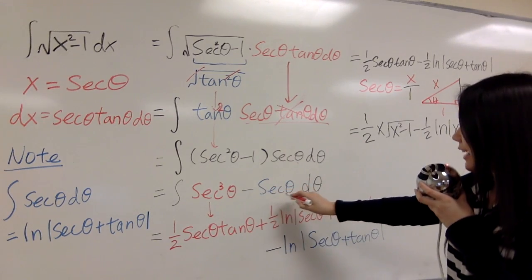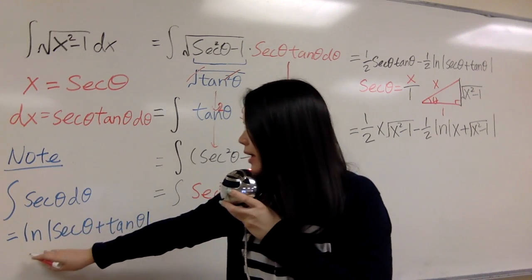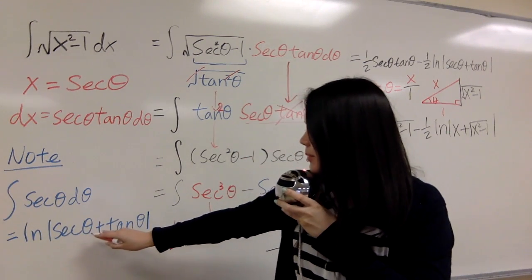For integral of secant theta, you can check out notes here. That would be ln secant theta plus tangent theta.